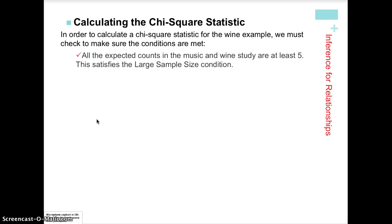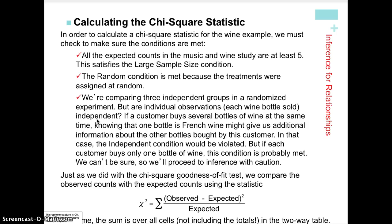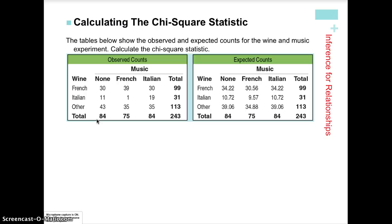Now we calculate the chi-square test statistic, but first we check conditions. Random: the treatments were assigned at random. Large sample size: all expected counts in our two-way table are at least five. Independent: this may or may not apply because people may be buying multiple bottles at the same time, so they're not necessarily independent — we'll proceed with caution. We expand the summation notation as before. You can use the matrix function in your calculator to help with the chi-square statistic for homogeneity and independence tests — though not goodness of fit.